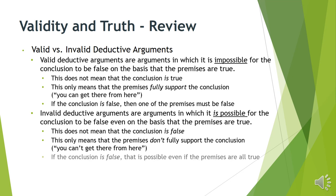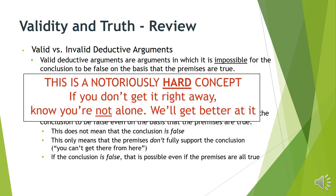If the conclusion is false in an invalid argument, it could just be that you're unlucky. You started with some premises that are true but the structure was bad, so of course the conclusion wasn't guaranteed. This is a notoriously hard concept — if you don't get this right away you're not alone. Many classmates will also struggle with this. We'll get better at it through exposure to valid and invalid arguments and seeing why each does or doesn't work.